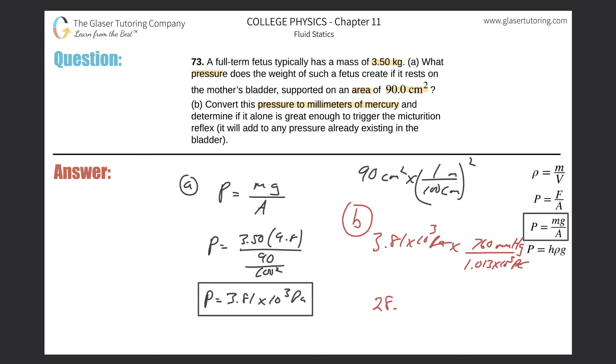This is the amount of pressure on the bladder. Now, in order to know if you're going to pee, you have to figure out if this pressure is high enough to trigger that reflex.